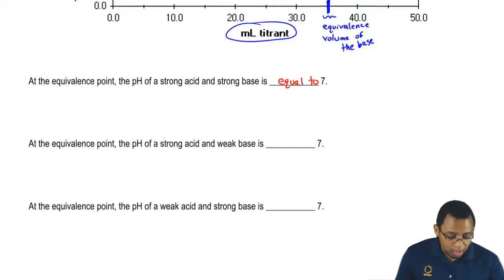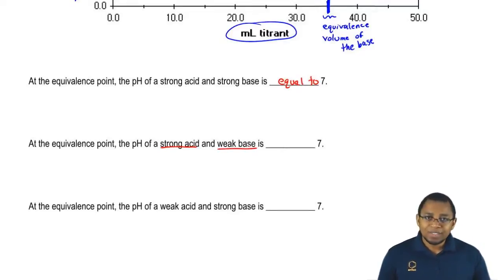Now if we're looking at a strong acid and a weak base, just remember whoever is weak will dictate what kind of solution you have at the end. Since we're dealing with a strong acid, the acid is stronger now than the base, so it's going to say since I'm stronger, I'm going to want my solution at the end to be acidic.